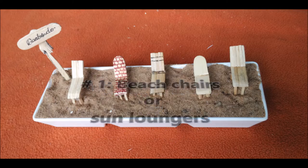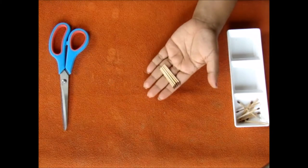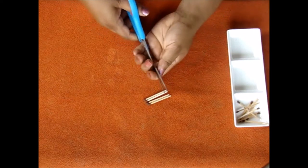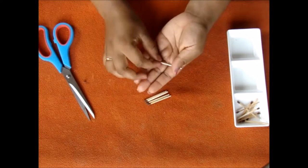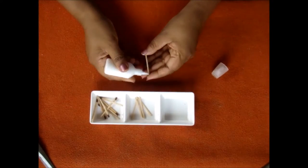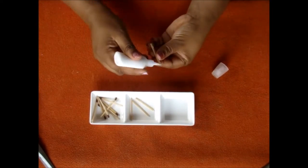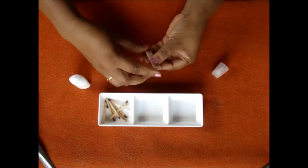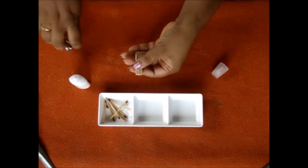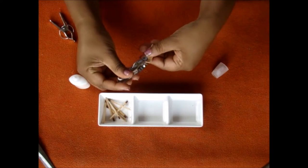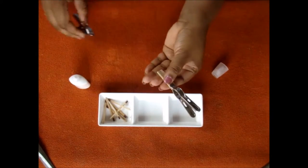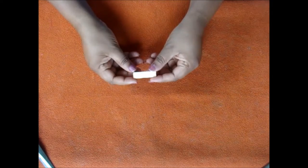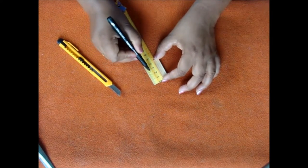Be it chair or sun lounges. Take five matchsticks. We had them with the help of a scissor. Now attach them side by side by adding some glue. I am using couple of clips to support them and let them dry. Once dry it will be like a plank.